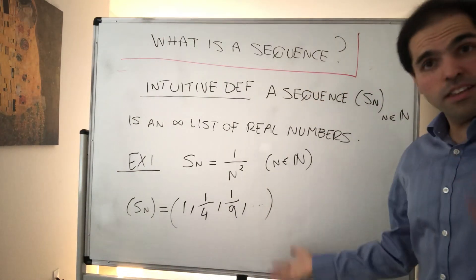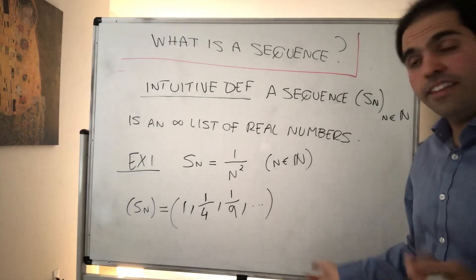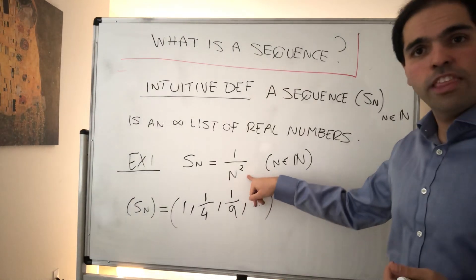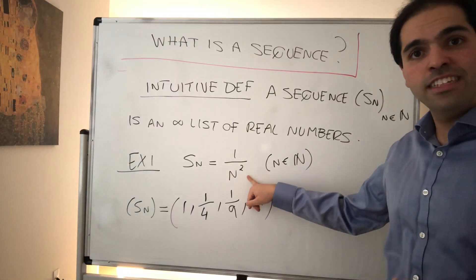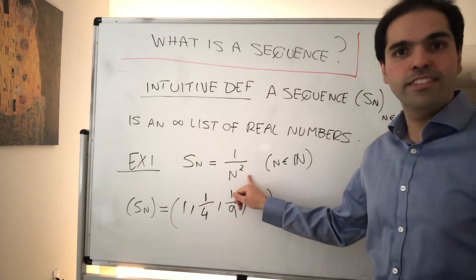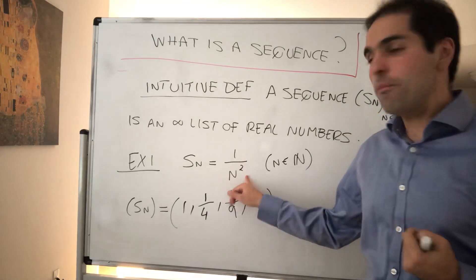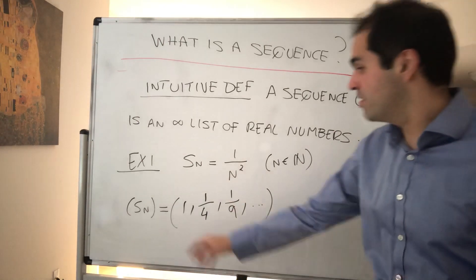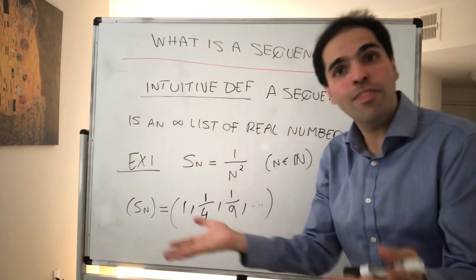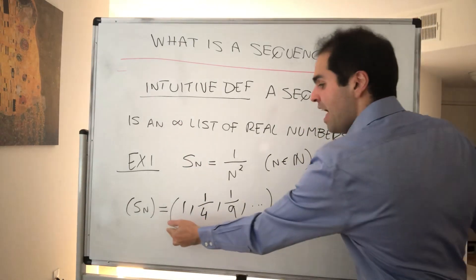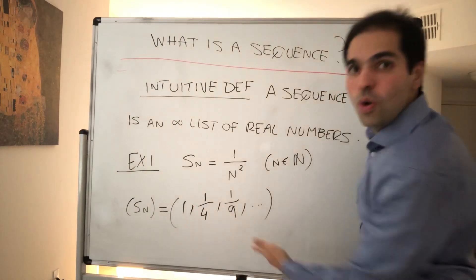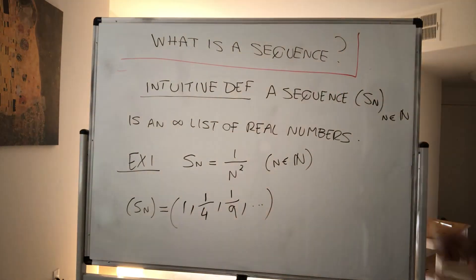A little distinction that's pretty important: when I write Sn without parentheses, I just mean the nth term of the sequence — the nth number in the sequence. But when I write (Sn) with parentheses, I mean the whole sequence — the whole list of numbers.